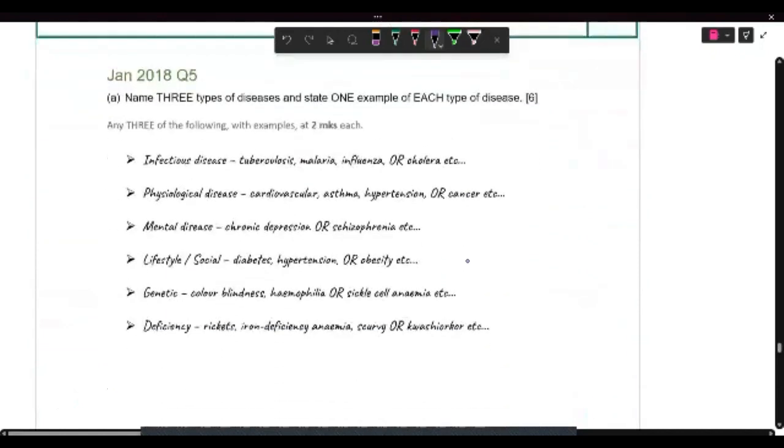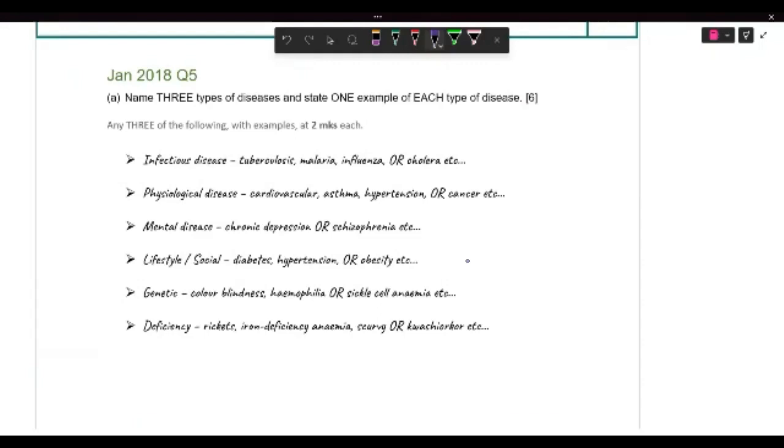And then we go to 2018 question five. Three types of diseases. And you have to state an example of each. So we have several types of disease. We have from the infectious, physiological, mental, lifestyle, genetic, deficiency, like all these types. And just any three of those and give an example. So you have those and examples provided as well.